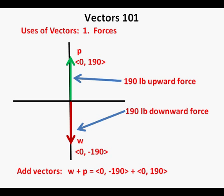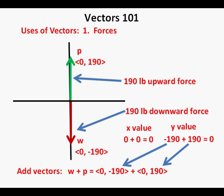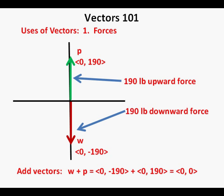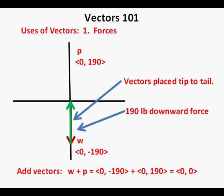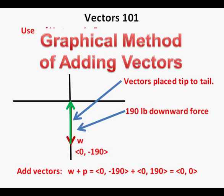The force from the piano bench pushing upward is represented by a green upward arrow. This is called vector P and is numerically represented as ⟨0, 190⟩. To find the net effect, we add vectors w and p. The x value of their sum is 0 plus 0 equals 0, and the y value is negative 190 plus 190, also 0. So the sum of these two vectors is ⟨0, 0⟩. This algebraic method of adding vectors can also be shown graphically by placing vectors head to tail, yielding the same result. In engineering, we use the same principles to support bridges and structures. Vector w plus vector p equals ⟨0, 0⟩.